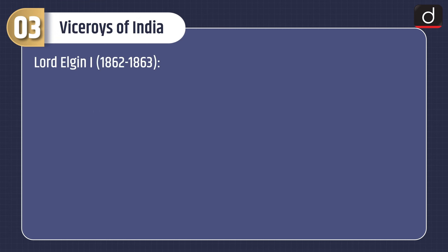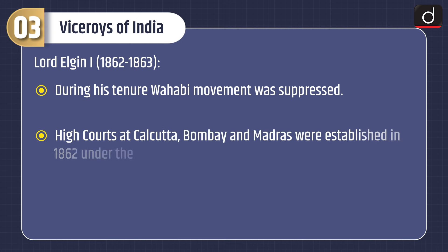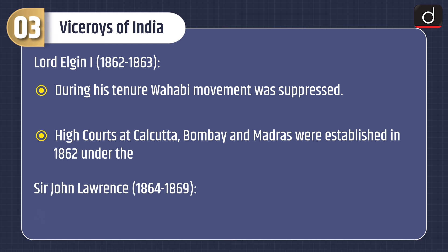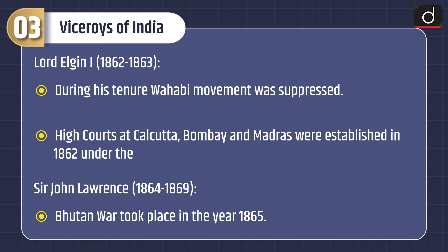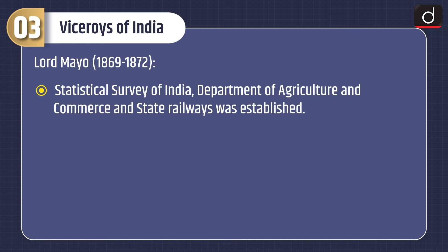Lord Elgin I, 1862–1863: during his tenure the Wahhabi movement was suppressed. High Courts at Calcutta, Bombay, and Madras were established in 1862. Sir John Lawrence, 1864–1869: the Bhutan War took place in 1865. Lord Mayo, 1869–1872: the Statistical Survey of India, the Department of Agriculture and Commerce, and State Railways were established.